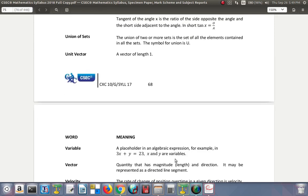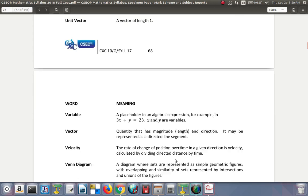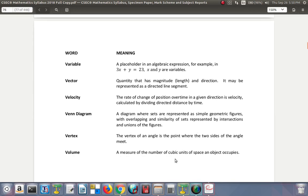Union of sets: the union of two or more sets is the set of all elements contained in all of the sets. The symbol for union is U, the big U-looking letter there. Unit vector: a vector of length one. Unity, that's one.